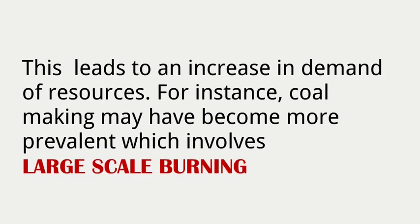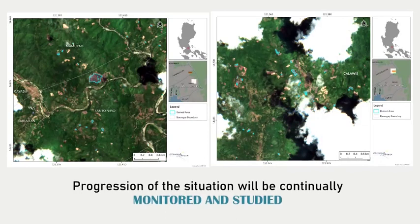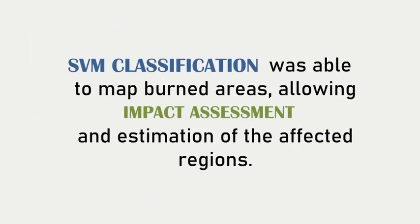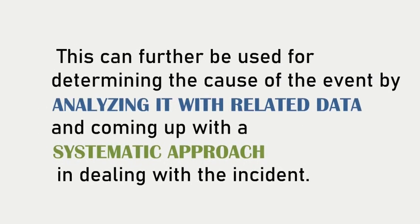This leads to an increase in demand of resources. For instance, coal making may have become more prevalent, which involves large-scale burning. Progression of the situation will be continually monitored and studied. SVM classification was able to map burned areas, allowing impact assessment and estimation of the affected regions. This can further be used for determining the cause of the event by analyzing it with related data and coming up with a systematic approach in dealing with the incident.